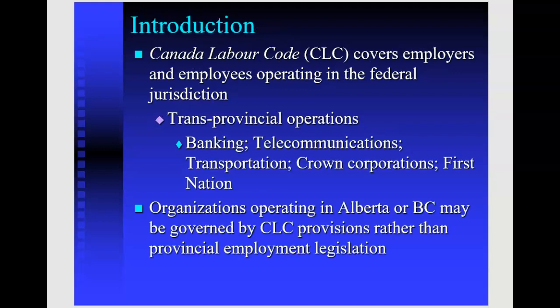The Canada Labour Code covers employers and employees that operate in the federal jurisdiction. Operating in the federal jurisdiction means trans-provincial operations — operations that cover more than one province. Examples include banking, telecommunications, transportation, crown corporations, and First Nations. So there are companies or organizations based in BC, Alberta, or any other province that, regardless of their provincial location, may be regulated and governed by the Canada Labour Code due to their main business.